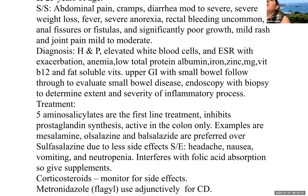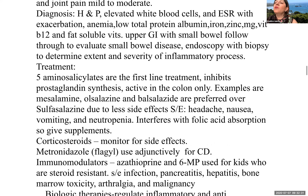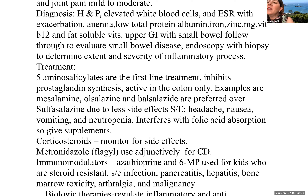Signs and symptoms: abdominal pain, cramps, moderate to severe diarrhea, severe weight loss, fever, severe anorexia. Rectal bleeding is uncommon; anal fissures or fistulas may occur. Significantly poor growth, mild rash, and joint pain are also often present. Diagnosis includes history and physical, elevated white blood cell count, elevated ESR during exacerbation, anemia, and low total protein/albumin. Iron, zinc, magnesium, vitamin B12, and fat-soluble vitamins may all be low. Upper GI with small bowel follow-through evaluates small bowel disease; endoscopy with biopsy determines the extent and severity of the inflammatory process.